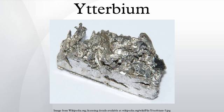In 1878, the Swiss chemist Jean-Charles Galissard de Marignac separated from the rare earth erbia another independent component, which he called ytterbia, for Ytterby, the village in Sweden near where he found the new component of erbium. He suspected that ytterbia was a compound of a new element that he called ytterbium.